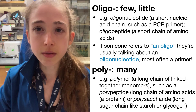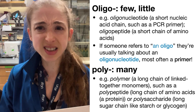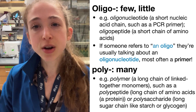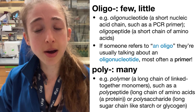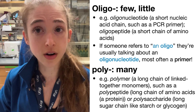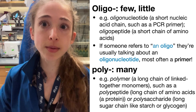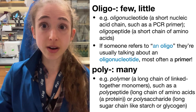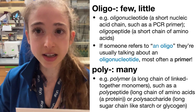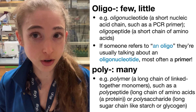When you hear the term oligo outside of any other context — used as a noun instead of just a prefix — you're probably talking about an oligonucleotide, which is a short DNA or RNA piece. And most commonly, if they don't give you any other information, they're talking about a DNA oligonucleotide used as a primer.